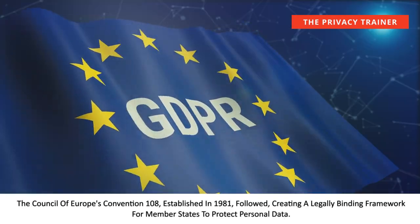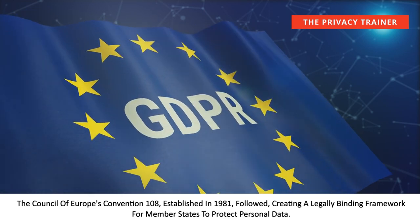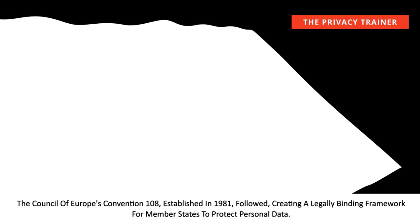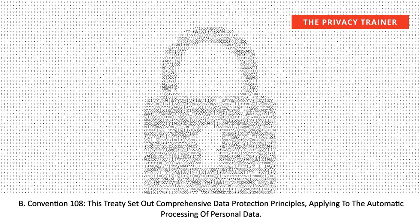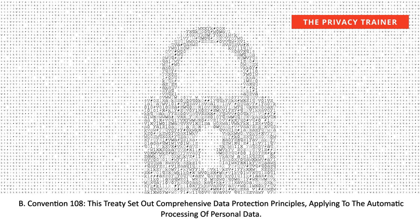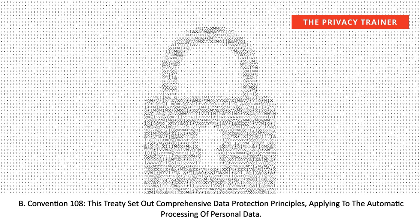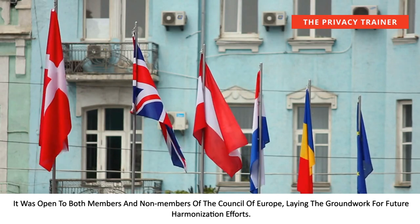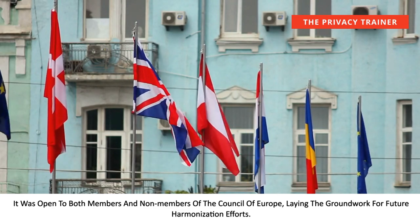The Council of Europe's Convention 108, established in 1981, followed, creating a legally binding framework for member states to protect personal data. This treaty set out comprehensive data protection principles, applying to the automatic processing of personal data. It was open to both members and non-members of the Council of Europe, laying the groundwork for future harmonisation efforts.